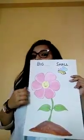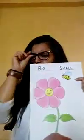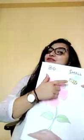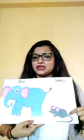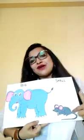This ball is so big, big, big. This ball is so small, small, small. This flower is so big, big, big. This honeybee is so small, small, small. This elephant is so big, big, big. And the rat is so small, small, small.